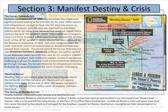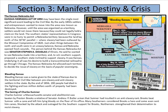The Kansas-Nebraska Act of 1854 may have been the single most significant event leading to the Civil War. By the early 1850s, settlers and entrepreneurs wanted to move into the area known as Nebraska. However, until the area was organized as a territory, settlers would not move there because they could not legally hold a claim on the land. Southern representatives in Congress were in no hurry to permit the Nebraska Territory, as the land lay north of the 36th parallel where slavery had been prohibited by the Missouri Compromise of 1820. Just when things between the North and the South were in an uneasy balance, Kansas and Nebraska opened fresh wounds.